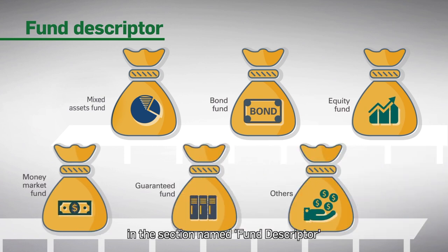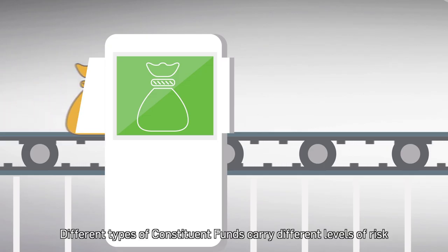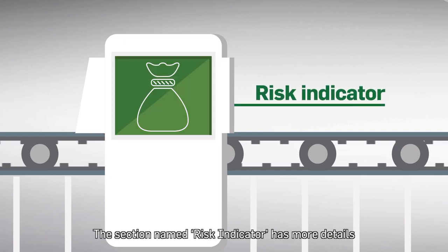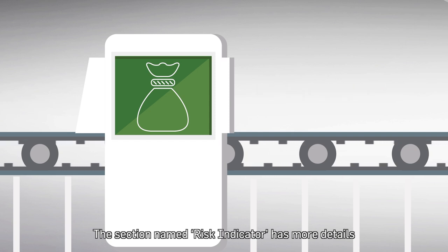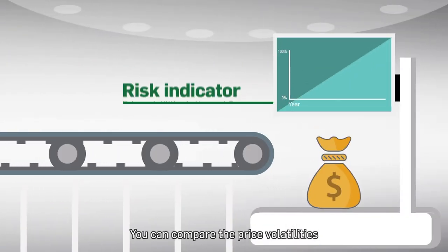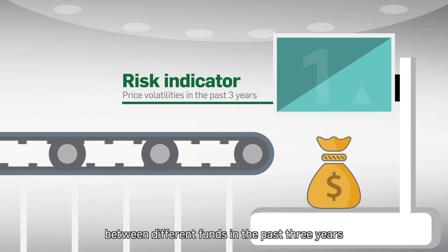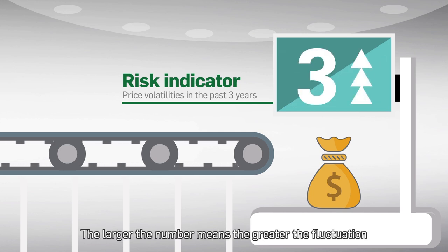The type of MPF Constituent Funds is clearly specified in the section named Fund Descriptor. Different types of constituent funds carry different levels of risk. The section named Risk Indicator has more details. You can compare the price volatilities between different funds in the past three years — the larger the number, the greater the fluctuation.